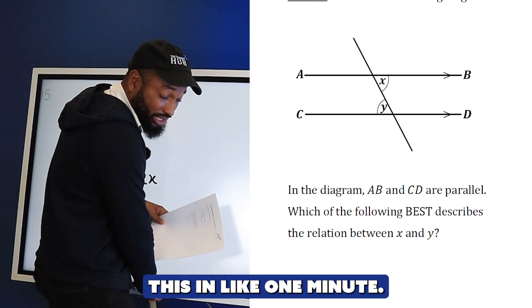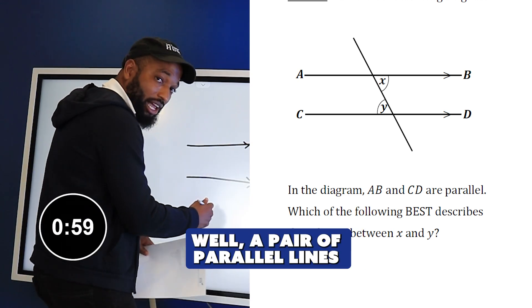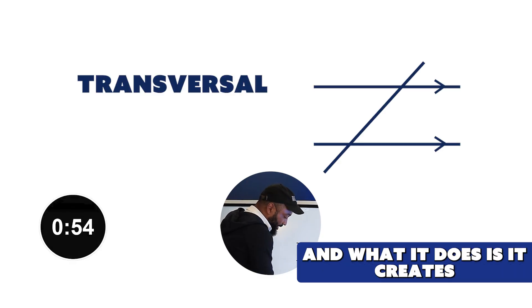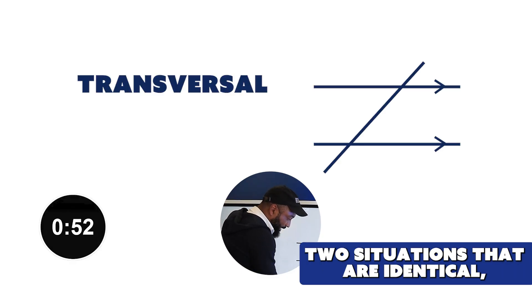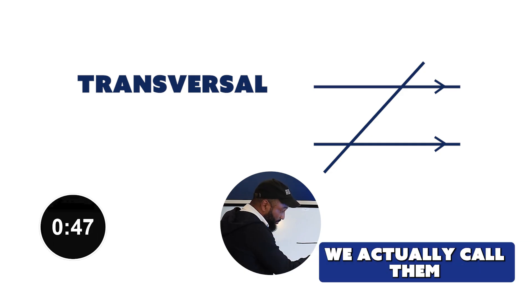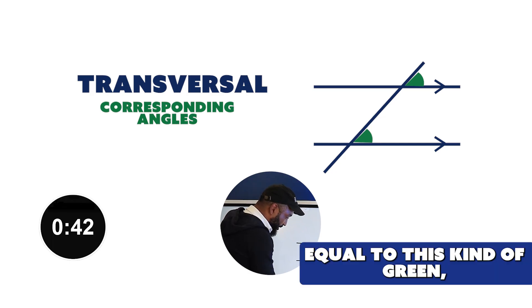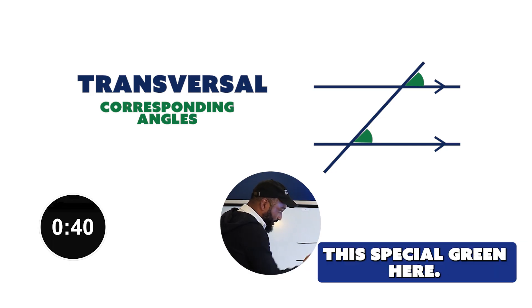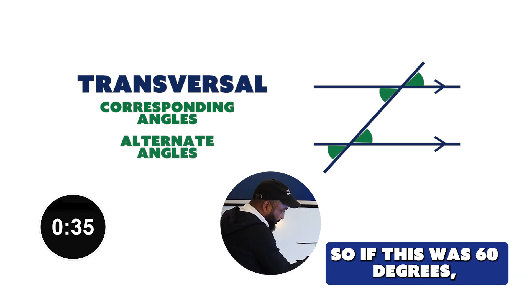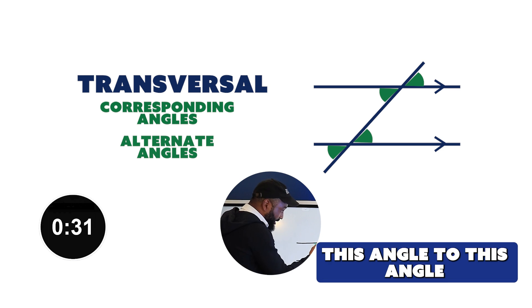This is a pair of parallel lines. If I draw a line across like that, that's called a transversal. It creates two situations that are identical. This angle here is equal to that angle there - we call them corresponding angles. This green angle is also equal to this angle here - we call it alternate.